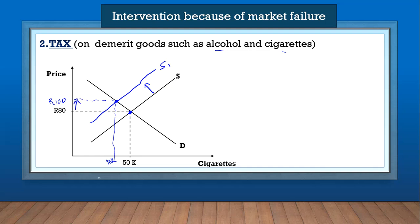So that is the impact of the tax: it will increase the price of the demerit goods and also reduce the quantity of those goods consumed — so there'll be less cigarettes consumed. The supply shifts from S to S1, which increases the price from 80 rands to 100 and reduces the quantity consumed, because for demerit goods the government wants people to consume less.